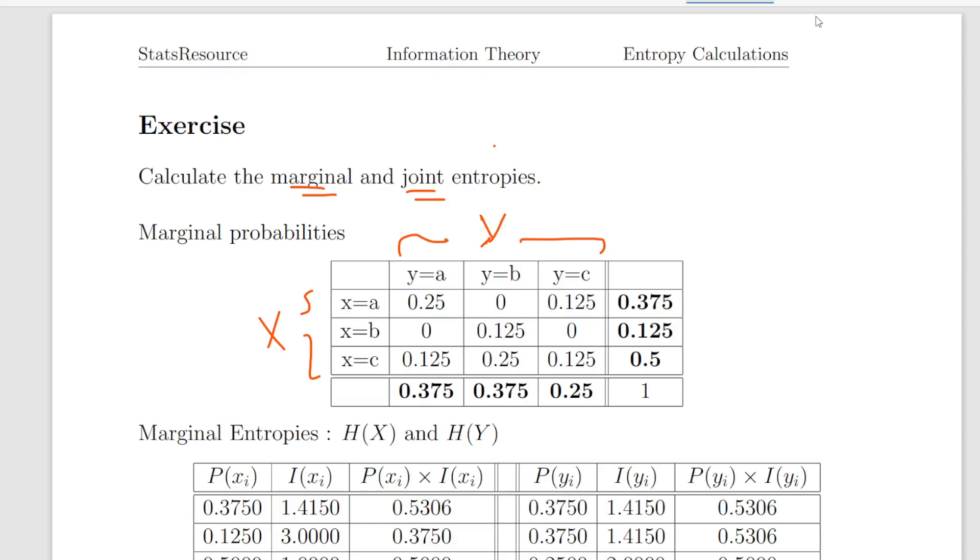So this is the information that we're given. We're given the joint probabilities here: 0.25, 0 and 0.125 and so on. So what we're going to do is get the marginal probabilities first off for X. For X the probability that X equals A is the sum of the first row, 0.375. The probability of X equals B is 0.125 and the probability that X equals C is 0.5. So that is just adding up the values in the rows.